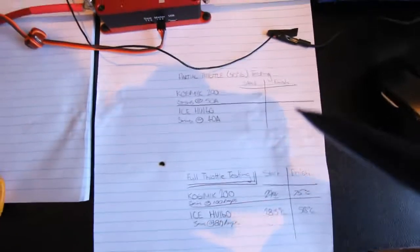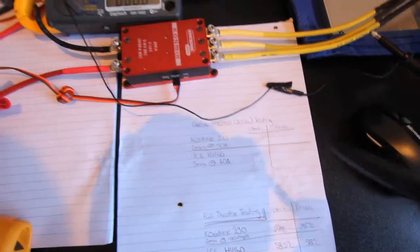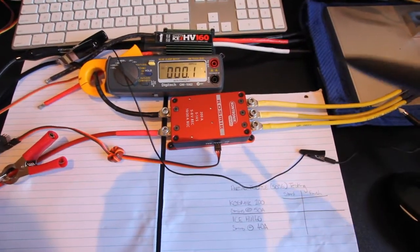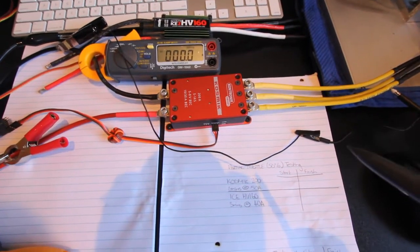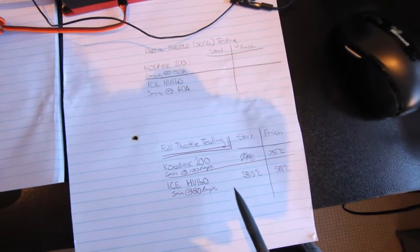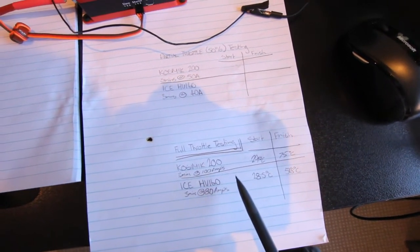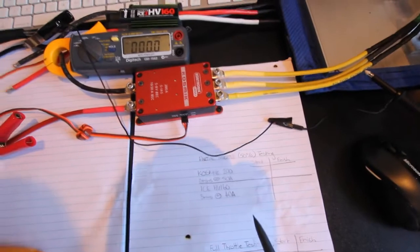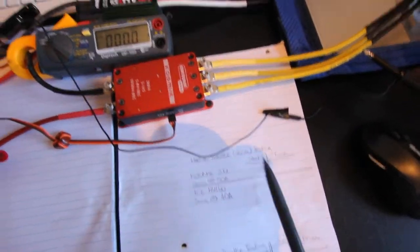Now it's at partial throttle where it starts to get interesting, because ESC is under much more stress. So we saw that the HV160 did outperform the Cosmic 200 in our full throttle test, but let's see how it's going to go in our partial throttle test.